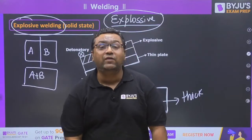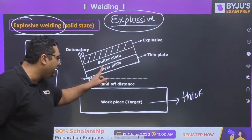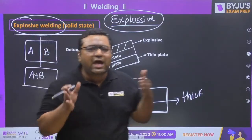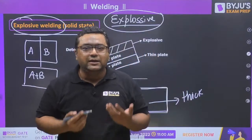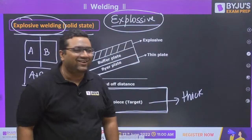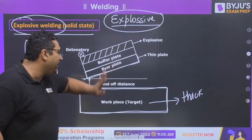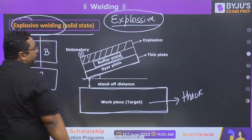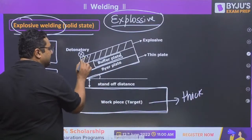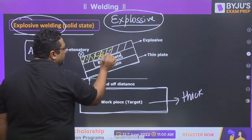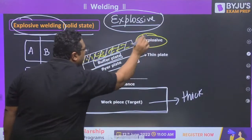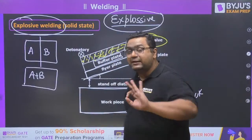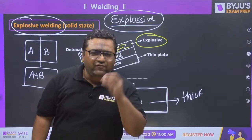In explosive welding, we want the flyer plate to come onto the target plate and become a layer over it. Some explosive material is placed over the setup along with a detonator to initiate the explosion. When the detonator starts the explosion, a very large pressure wave is created which drives the flyer plate onto the target plate, making it a top layer of the target plate.